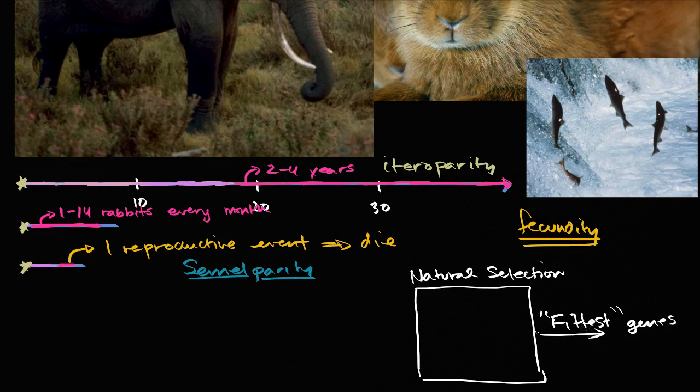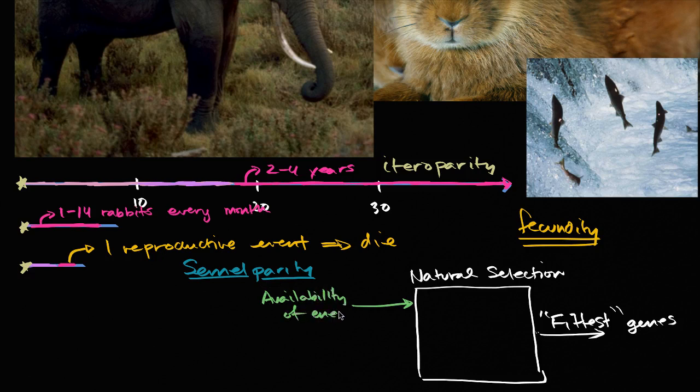And then the inputs that are going into this natural selection box are things like availability of energy, of food, of free energy. Availability, because it's not just, obviously plants can get that free energy from the sun. Availability of energy.